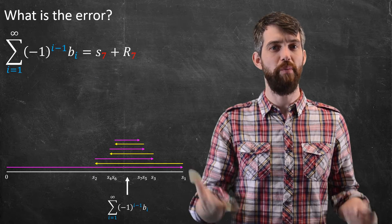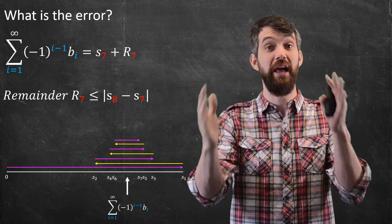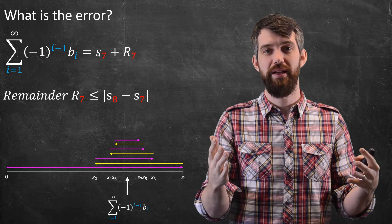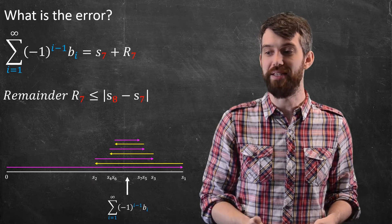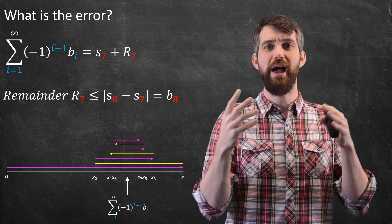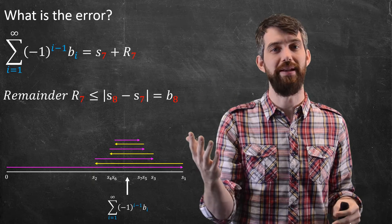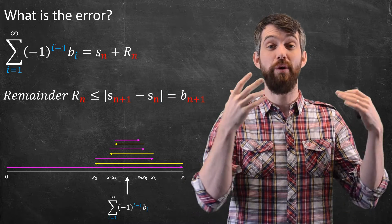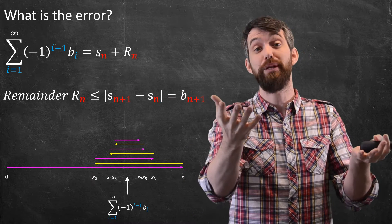So whatever the remainder is, I can definitely say that r7 is going to be less than the distance between s8 and s7. That is, between the one term and the next one. And indeed, the difference between s7 and s8 is just whether I've added the eighth term on, as in this is just that b8. So in other words, my r7, my remainder when I take seven terms, is just bounded by whatever the eighth term is. In general, if I replace seven here with n, I can say that my remainder of n terms is just going to be whatever the n plus 1 term was.